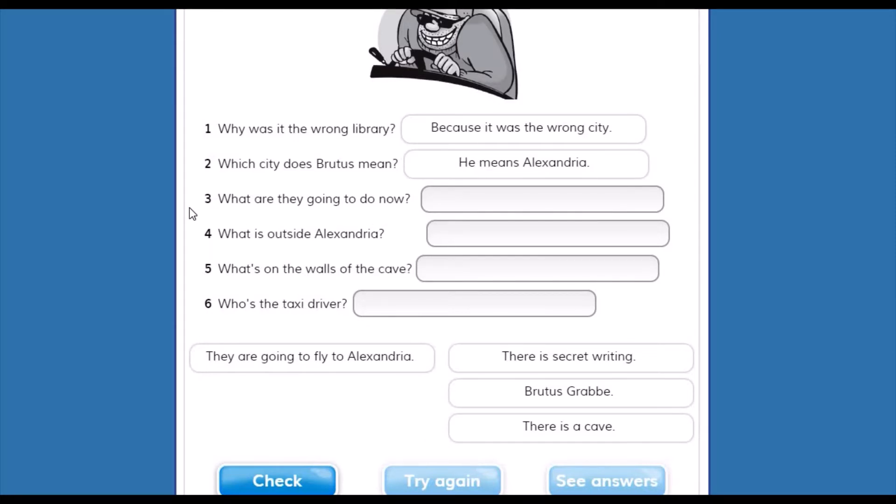Number three. What are they going to do now? ¿Qué van a hacer ellos ahora? They are going to fly to Alexandria. There is a secret writing. Brutus grave. There is a cave. They are going to fly to Alexandria.